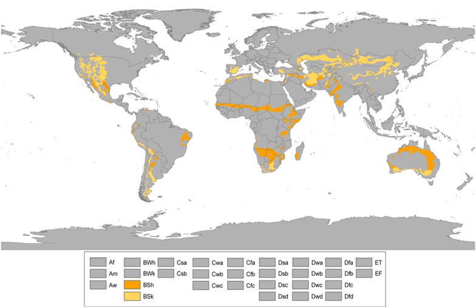Cold semiarid climates, type BSK, tend to be located in elevated portions of temperate zones, typically bordering a humid continental climate or a Mediterranean climate. They are typically found in continental interiors some distance from large bodies of water. Cold semiarid climates usually feature warm to hot dry summers, though their summers are typically not quite as hot as those of hot semiarid climates. Unlike hot semiarid climates, areas with cold semiarid climates tend to have cold winters, and these areas usually see some snowfall during the winter, though snowfall is much lower than at locations at similar latitudes with more humid climates.